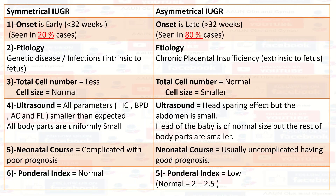Now this table shows us all the differences together. In symmetrical IUGR, the onset is early — less than 32 weeks — seen in 20% of cases. Whereas in asymmetrical IUGR, the onset is late — more than 32 weeks of gestation — seen in 80% of cases. The etiology in symmetrical IUGR may be genetic and infectious, and in asymmetrical IUGR, chronic placental insufficiency.